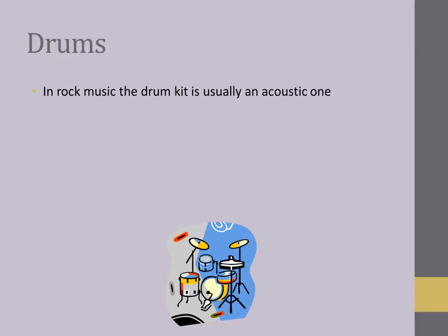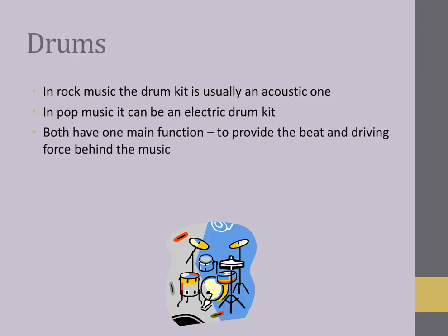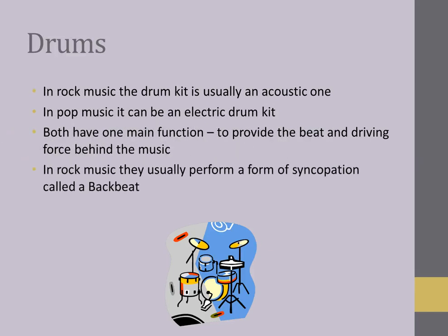Drums. In rock music the drum kit is usually an acoustic one. In pop music it can be an electric drum kit. Both have one main function: to provide the beat and driving force behind the music. In rock music they usually perform a form of syncopation called a backbeat, which emphasises beats two and four of the bar.